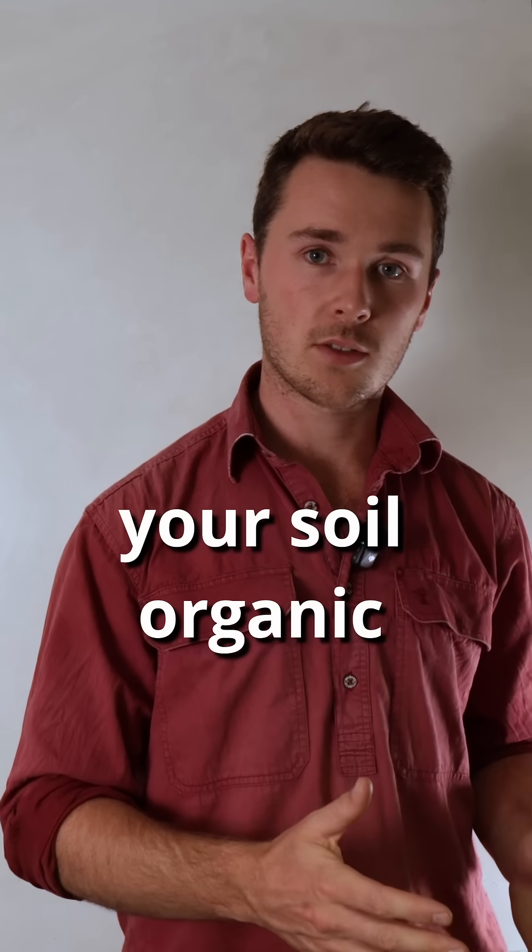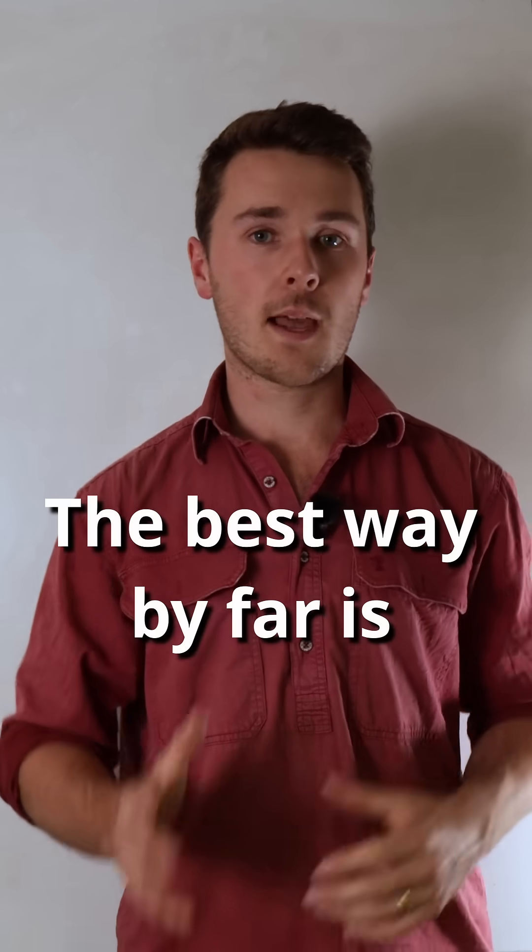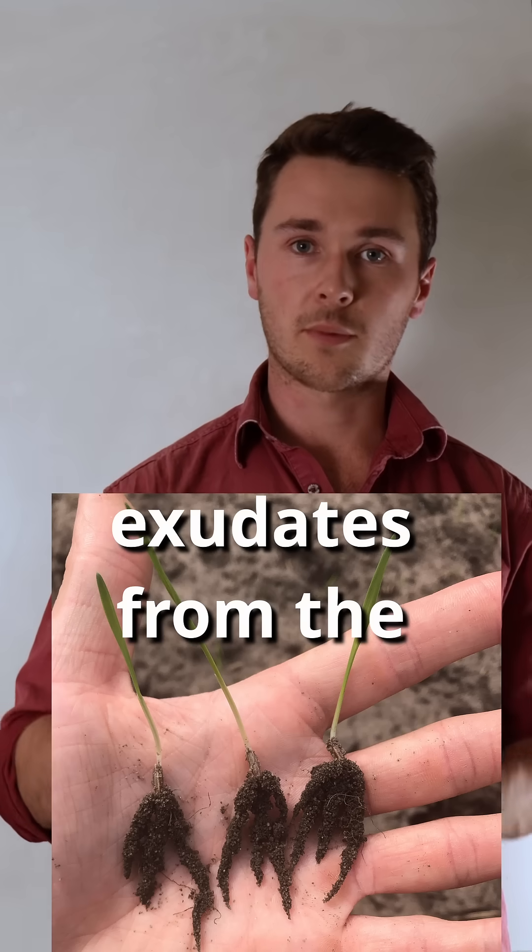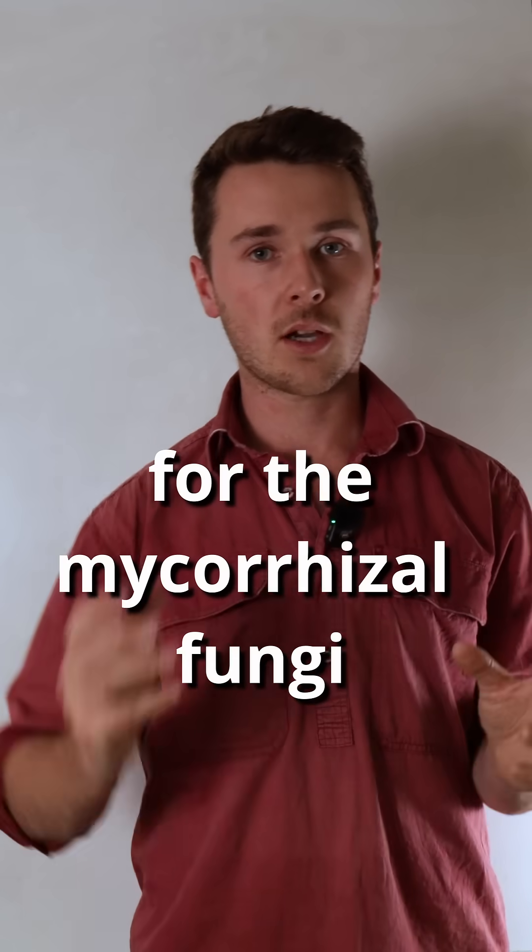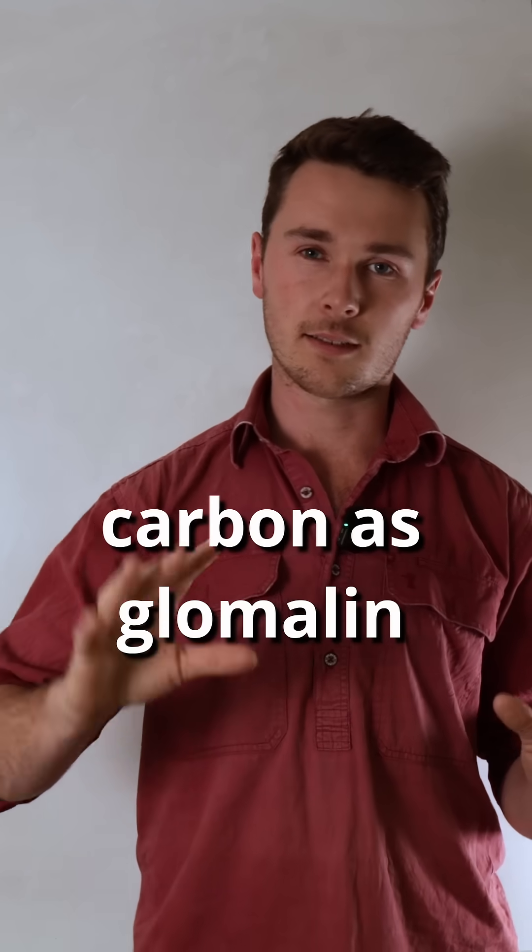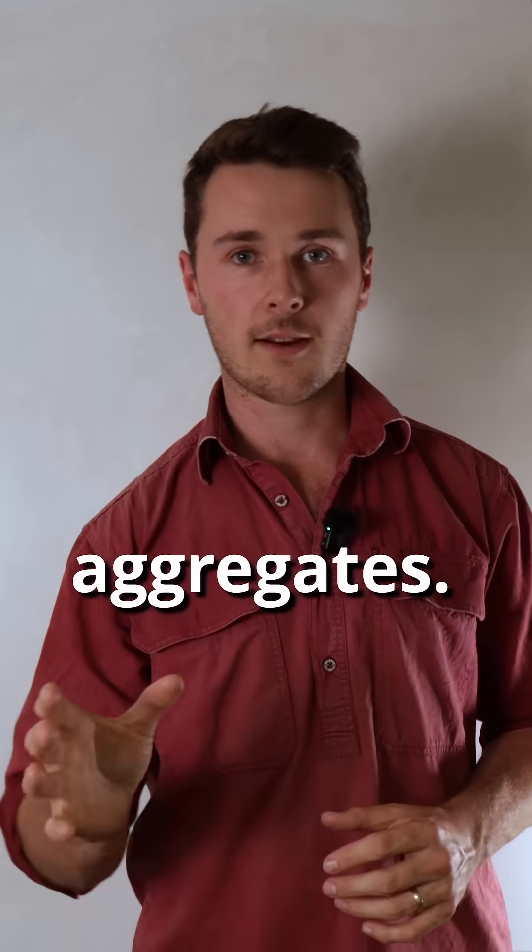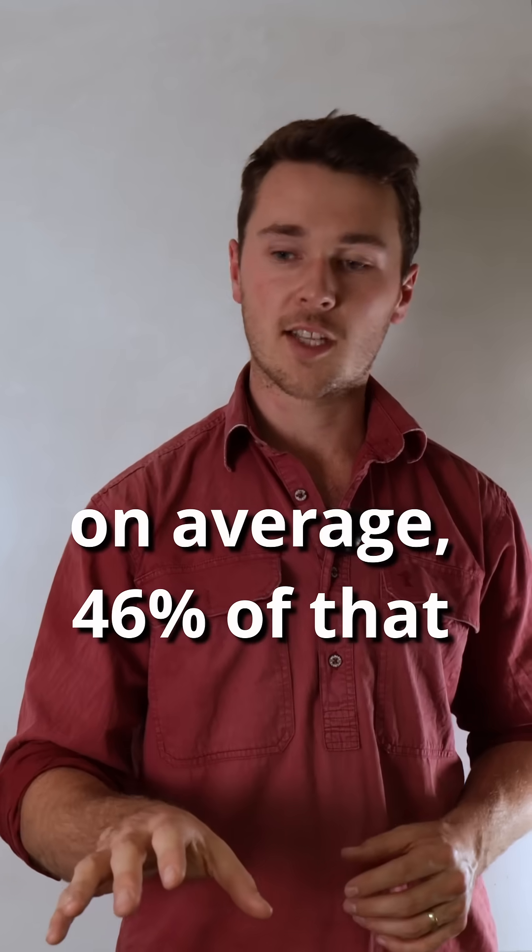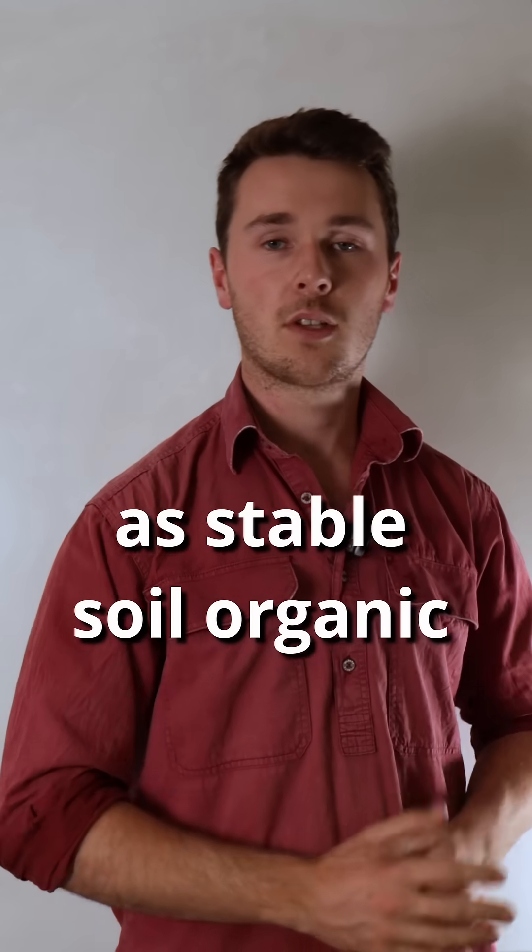The best way by far is the liquid carbon pathway, which uses root exudates from the plant to feed mycorrhizal fungi for the mycorrhizal fungi to then deposit that carbon as glomalin and some other compounds into soil aggregates. So whatever carbon the plant puts out as root exudates, on average, 46% of that actually ends up as stable soil organic carbon.